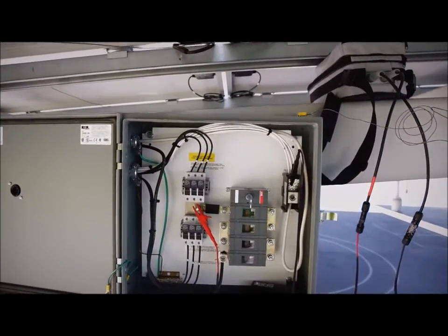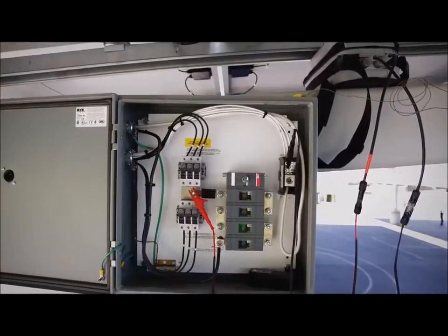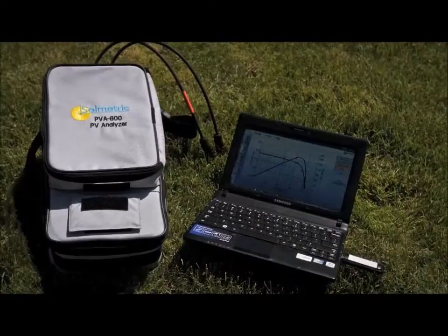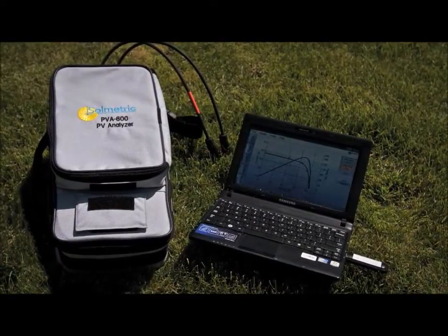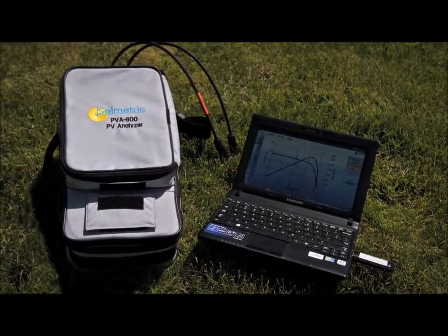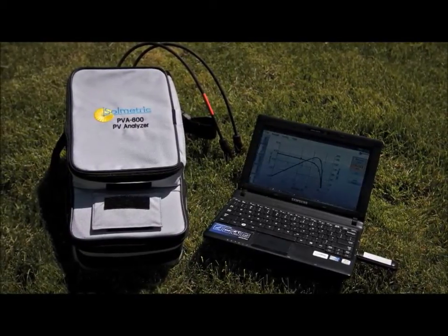Measurements take just seconds and the results are immediately compared to an advanced PV model to evaluate the performance of the system. The Solmetric PV Analyzer IV measurement unit is controlled wirelessly by the user's PC. System software and a wireless USB adapter are provided.